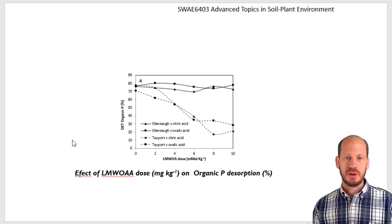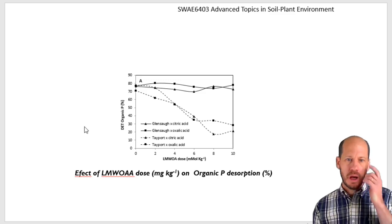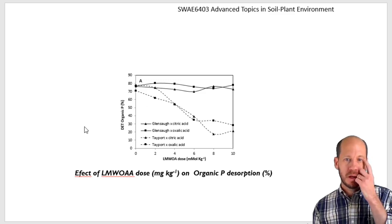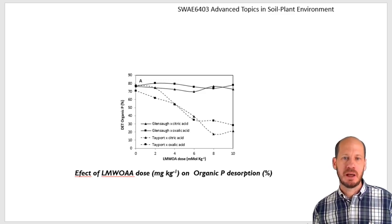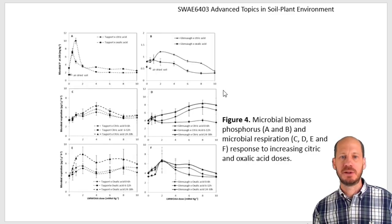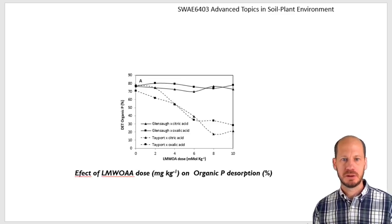Looking at DT — the soil solution concentration — versus organic acid dose, we see concentrations going down with both citric and oxalic acids in one soil, while in the other soil it remains completely stable.